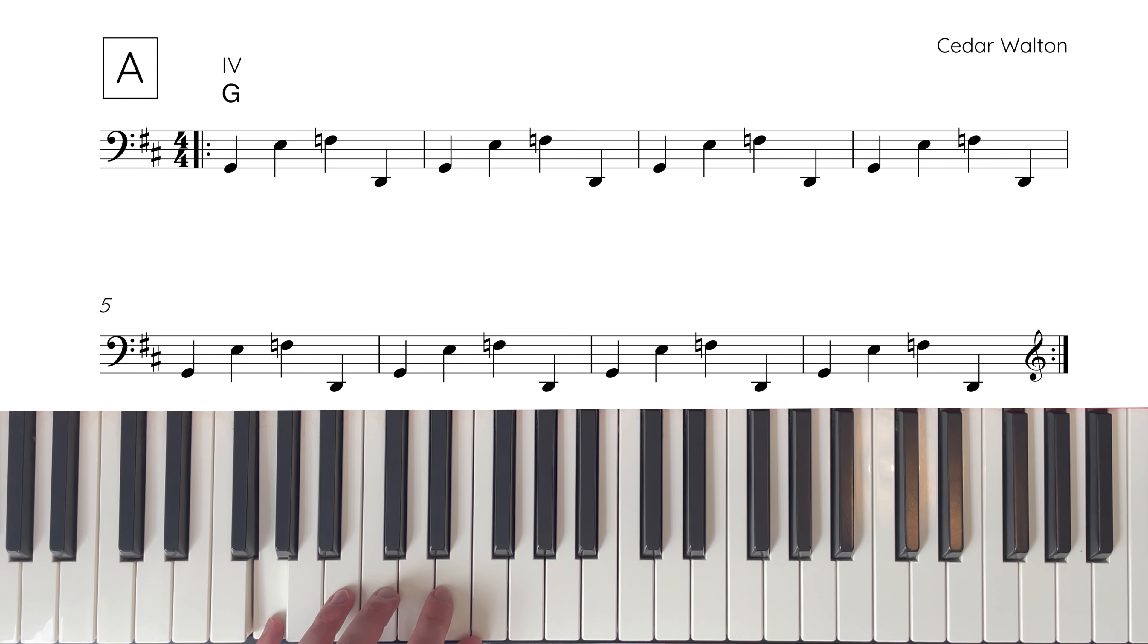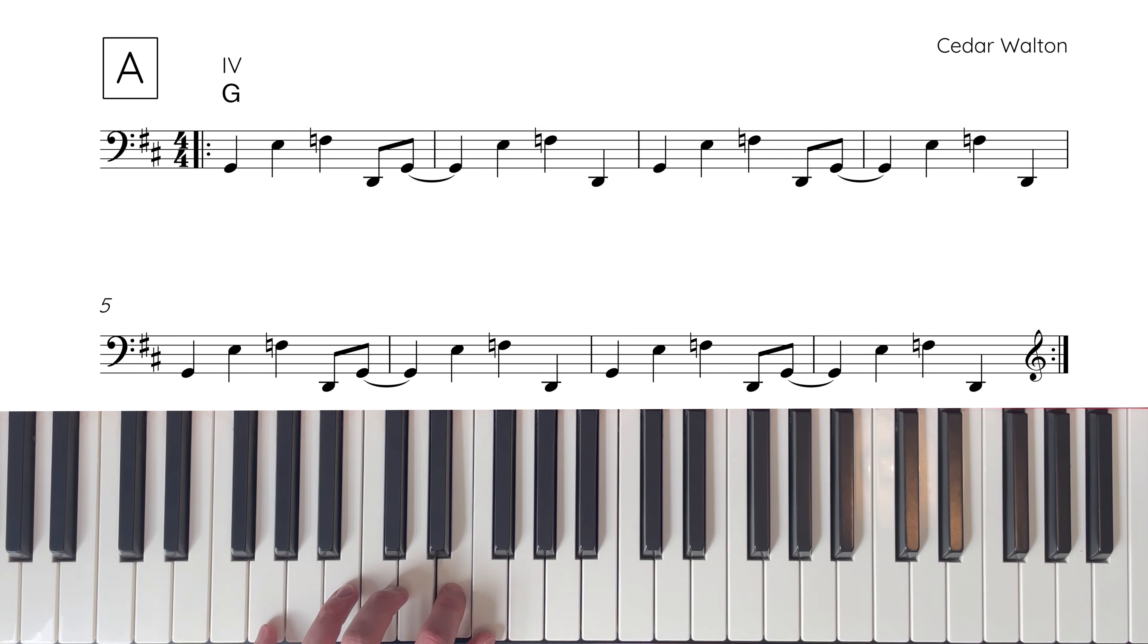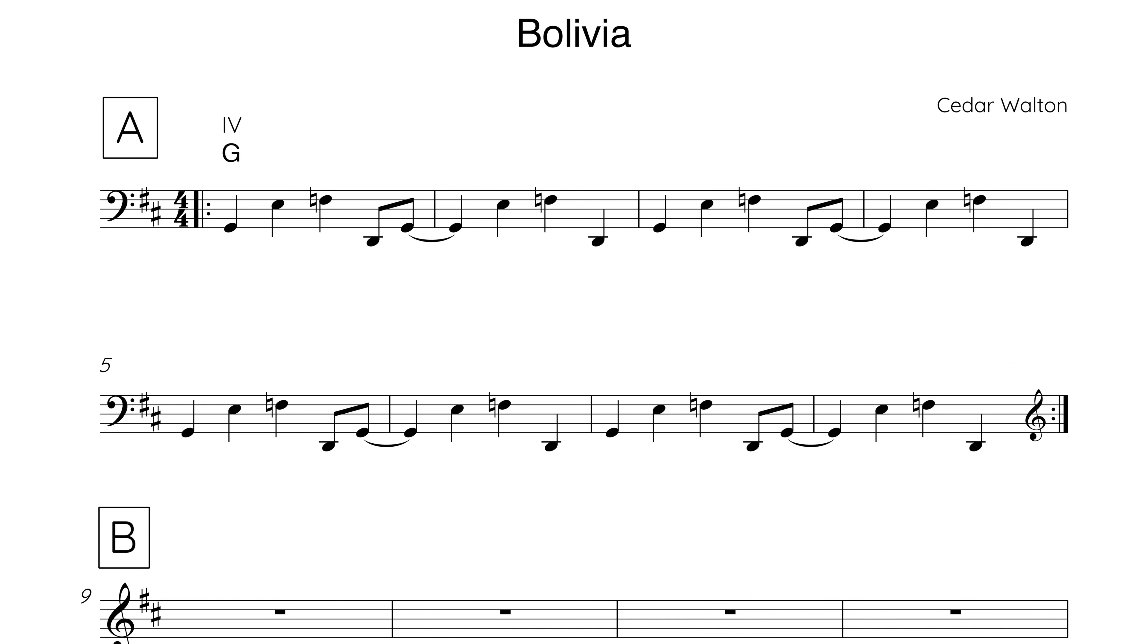So first off, let's look at the key bits of information. Bolivia has two main sections, the A section, which is a 16 bar vamp, and the B section, which is also 16 bars and packed full of harmony. The time signature is 4-4, and the home key is D major.